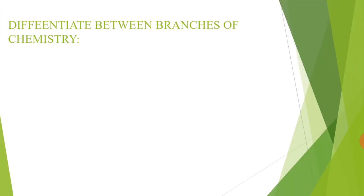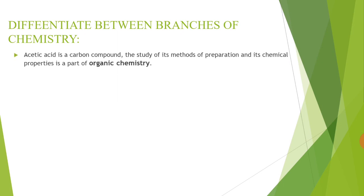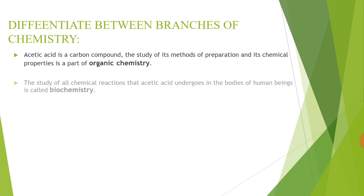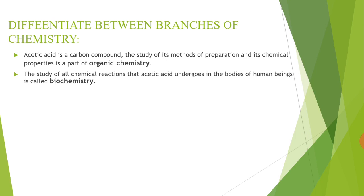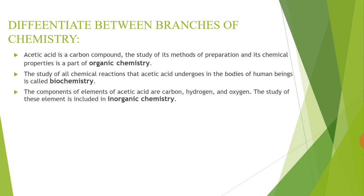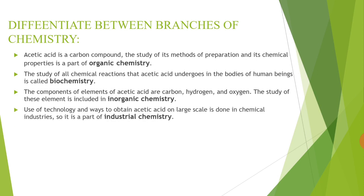Let's see how various studies on acetic acid help us differentiate the branches of chemistry. Acetic acid is a carbon compound — the study of its method of preparation and its chemical properties is part of organic chemistry. The study of all chemical reactions that acetic acid undergoes in the bodies of human beings is biochemistry. The elements of acetic acid are carbon, hydrogen, and oxygen — the study of these elements is included in inorganic chemistry. The use of technology and ways to obtain acetic acid on a large scale is done in chemical industries, so it is part of industrial chemistry.